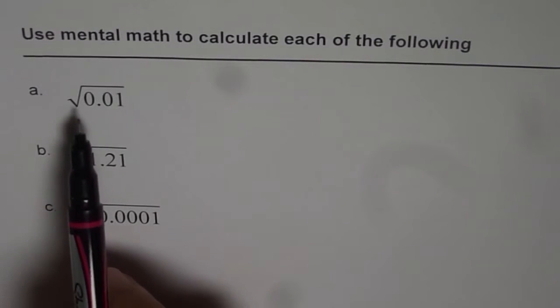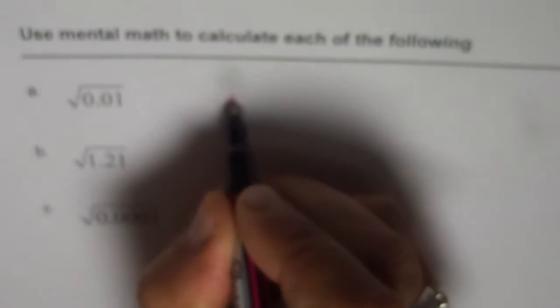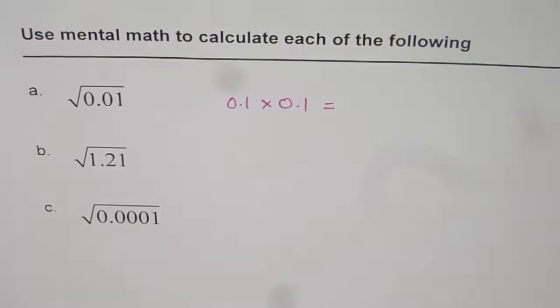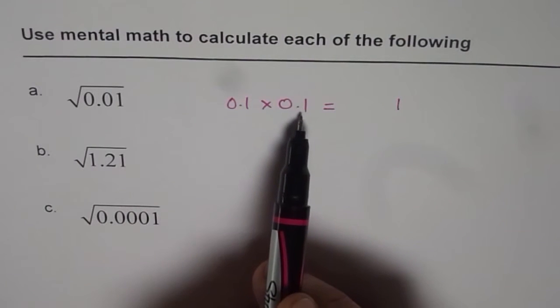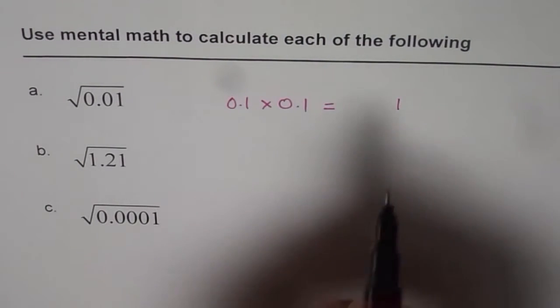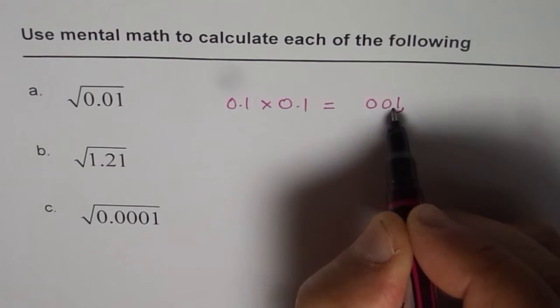Now square root of 0.01, what should it be? Try multiplying 0.1 with 0.1. What do you get? 1 times 1 is 1. Now since there are two numbers after the decimal, I have to put the decimal after two numbers. So the decimal is here, we move it two places.